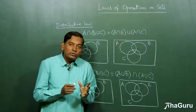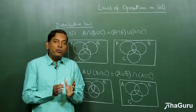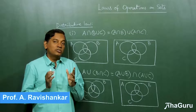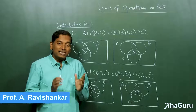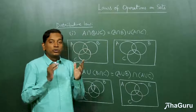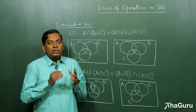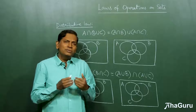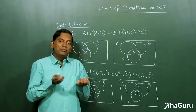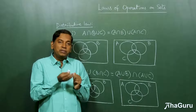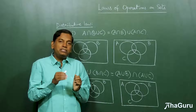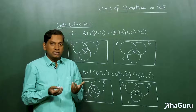Here, we are going to see some important laws related to the operations on sets. The first one is what is known as distributive law. Distributive law is something that you are already familiar with in numbers. For example, you know it as A times B plus C is A times B plus A times C on numbers.